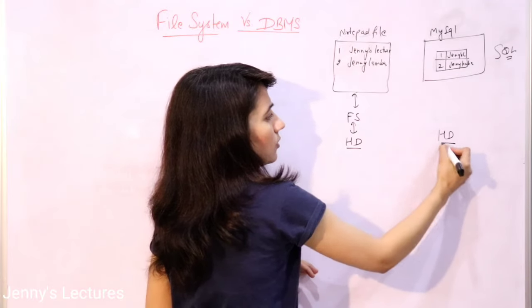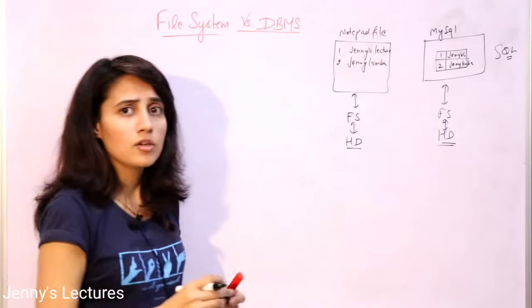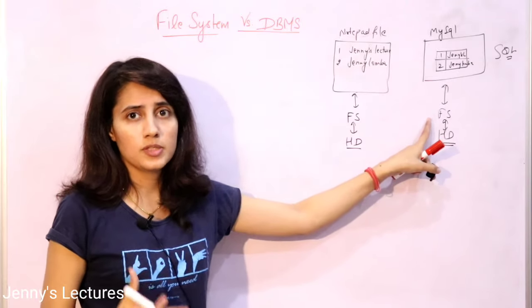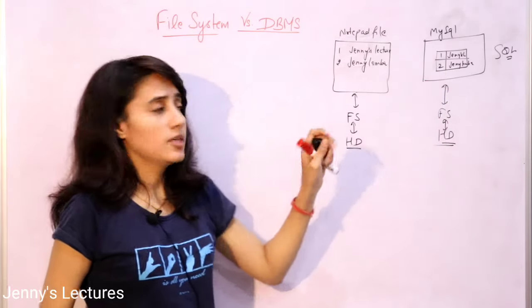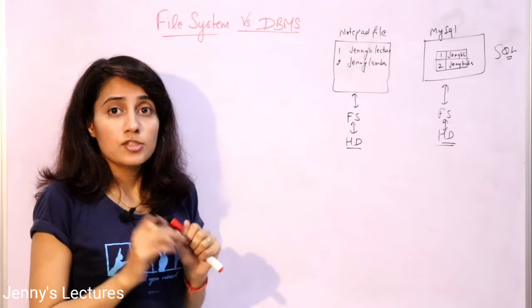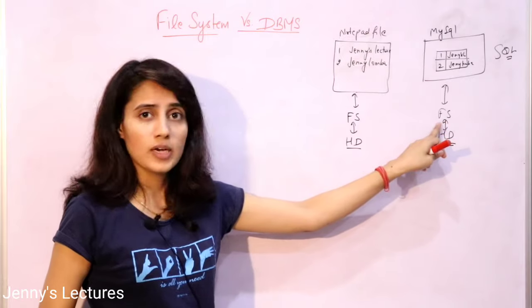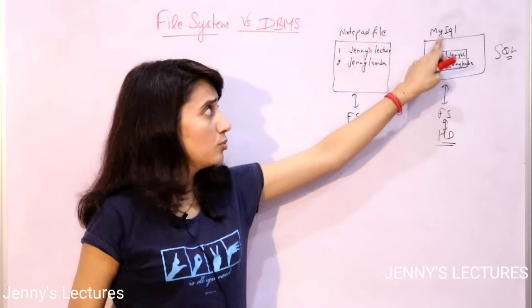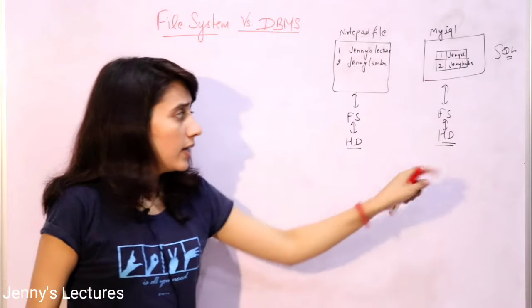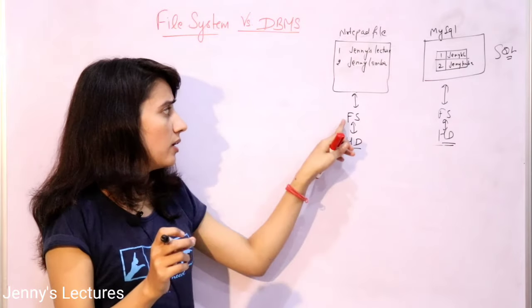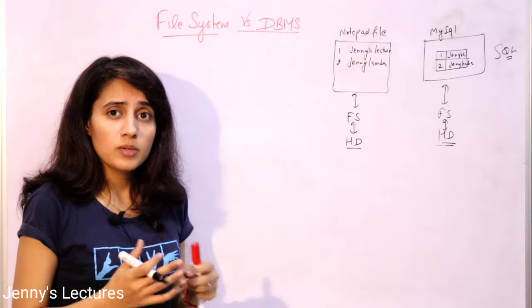This table is also going to be stored on the hard disk, and there is still a file system present. It is not that we have removed the file system — we still have it. The difference is: in DBMS, for managing our database, we are using DBMS software; whereas before, for managing data, the simple file system was responsible. So the flow is: DBMS (like MySQL) → creates a table → goes to file system → stored on hard disk. We have not removed the file system; we have added DBMS on top of it for better data management.